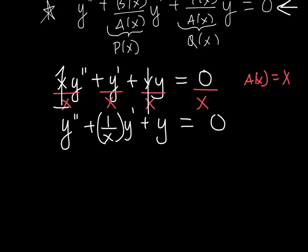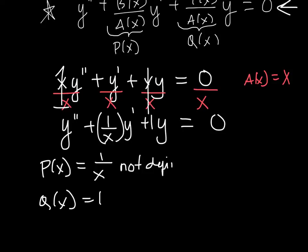Okay, now, what's my P(x), and what's my Q(x)? Okay, so P(x) is 1/x, and Q(x) is just 1. And notice P(x) is not defined, or it's undefined at x = 0. Because this guy is a rational function.